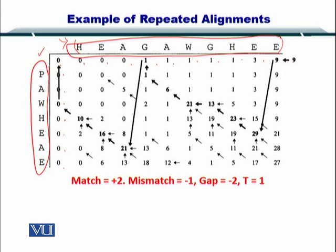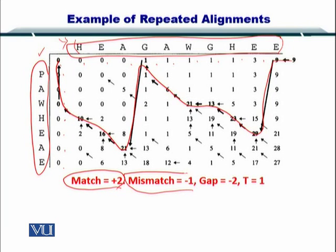And then you have done some traceback. As you can see the traceback is very strange in this case. We need to understand how to perform this traceback. But before we go to the traceback, please remember that we have used a match award of plus 2, a mismatch award of minus 1, a gap of minus 2, and T equals 1 in this case.